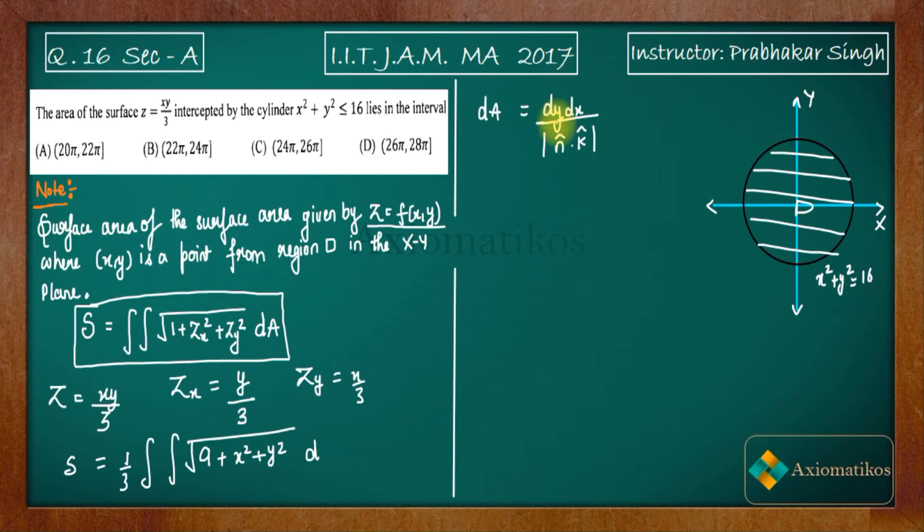That dA is equal to, if you are inside XY plane, it is equal to dY dX by N cap dot K cap. Now you are on the XY plane. So what will be your normal? Normal will be Z axis. You know that XY and Z axis are mutually perpendicular. So what will be the normal to the XY plane? The normal to the XY plane will be Z axis. Now this circle or you can say this region which is inside the circle is on the XY plane. So the normal for XY plane and this region will be same. So Z axis will be normal. So what is the unit normal along Z axis? It is K cap. So it will be dY dX. K cap dot K cap. So you will get dY dX finally. So it is dY dX.